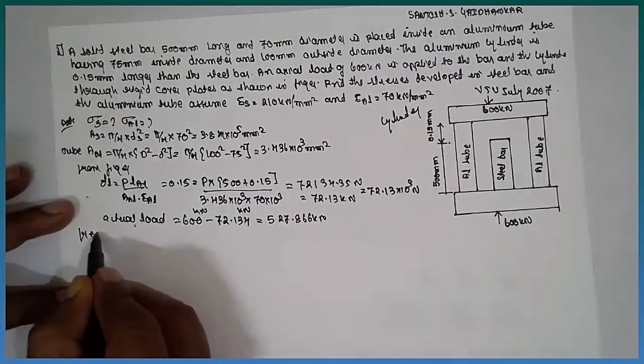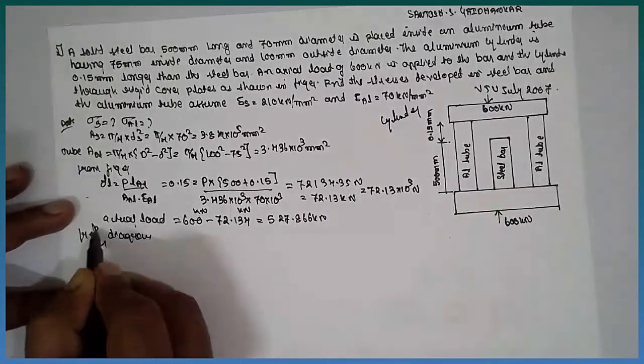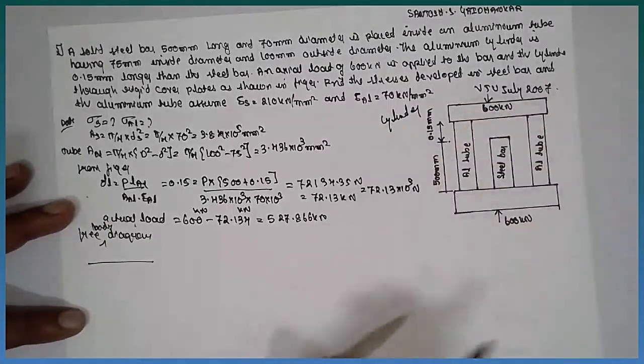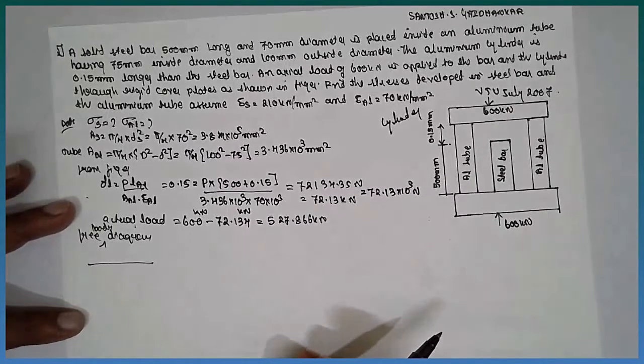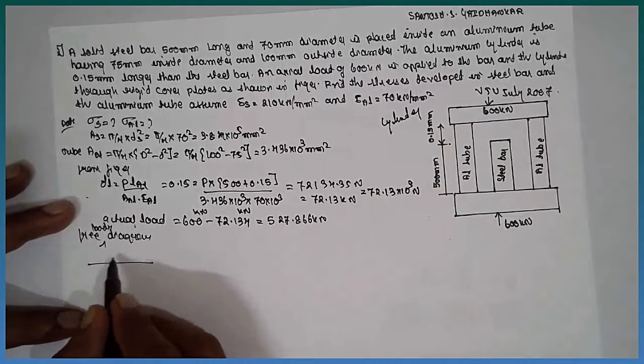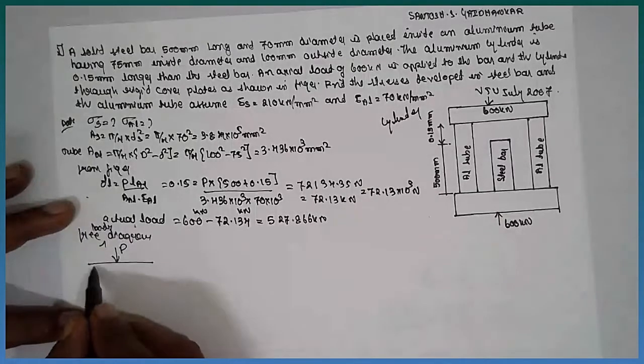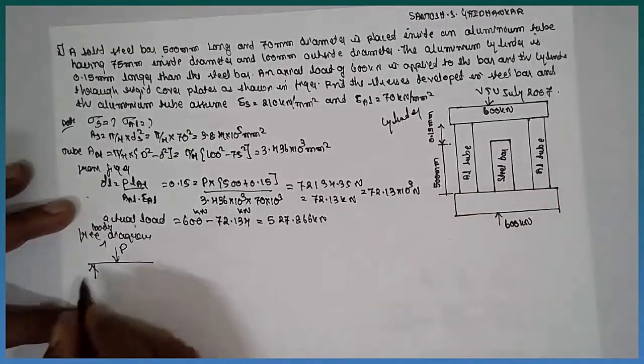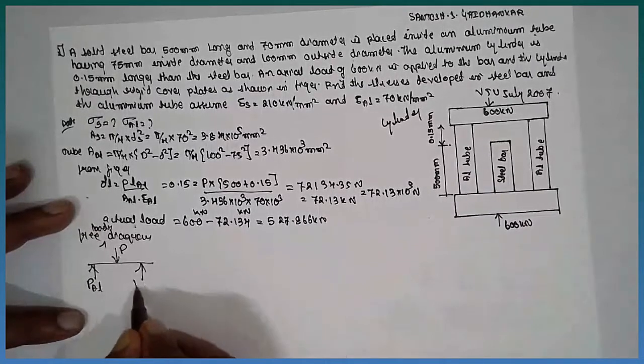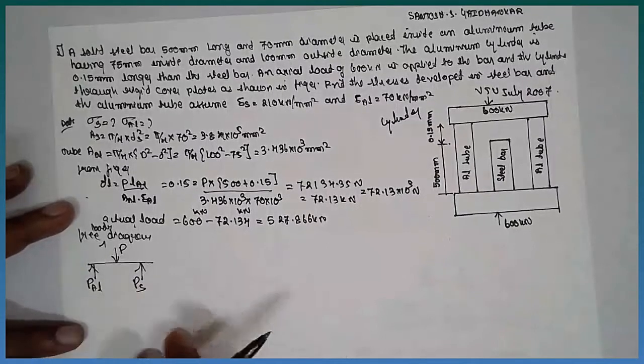Now, draw the free body diagram. As the load acting downward, this is the P, the tube and the steel will act upward. Therefore, you have to write only single time. P AL and this will be P S. It is a tube, not the solid section.